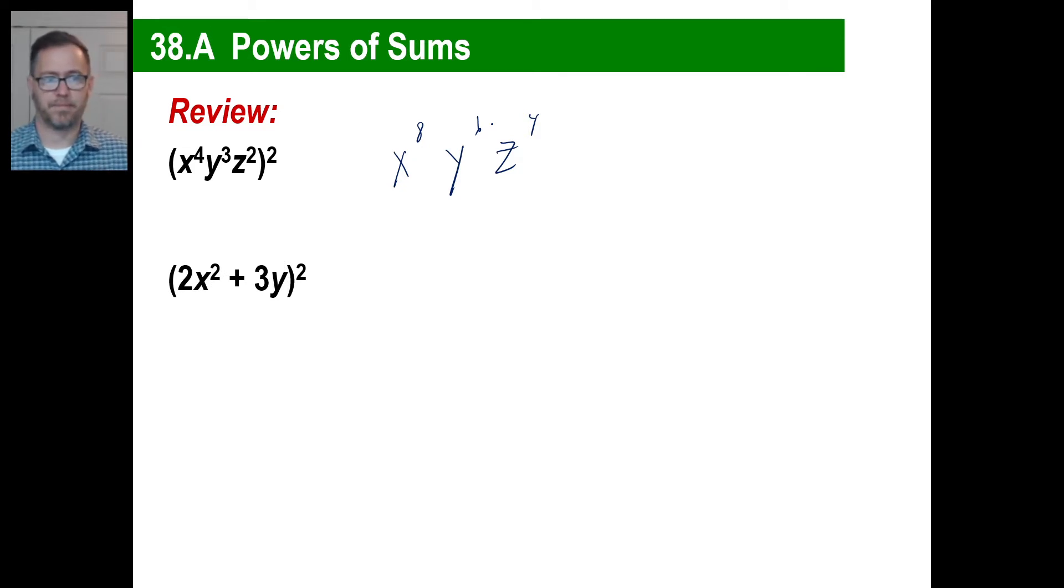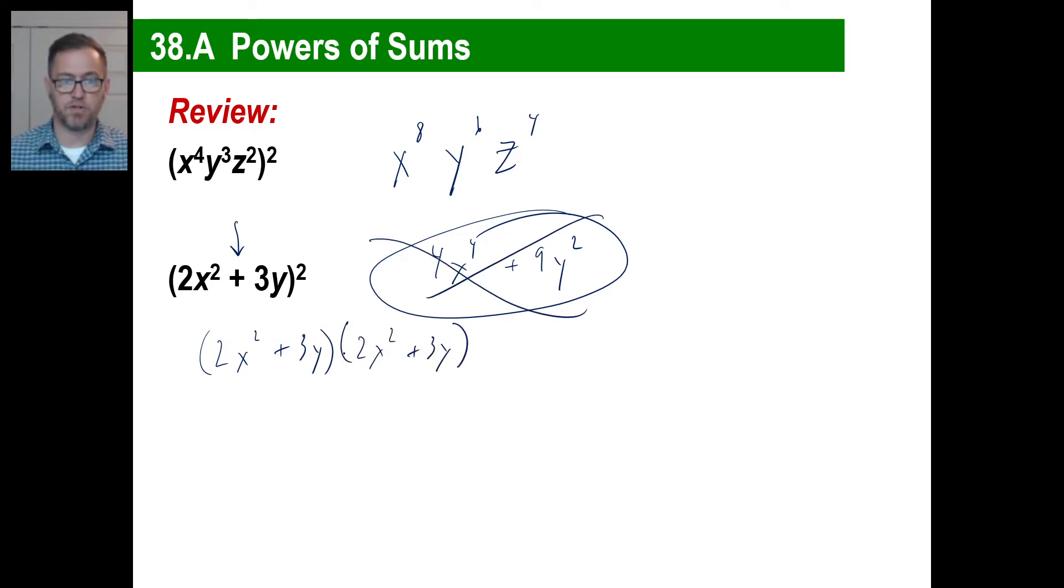How about this one? Now what's different between that and the one above it? What has been added to the second one to make it different from the first one? The plus sign, right? So on this one, you cannot just go, oh, 2x squared, that's going to be 4x to the 4th, and then plus 9y squared. No, you can't do that because of this plus. What this actually means is you're going to have to actually physically write it out. You're going to have to do the 2x all the way across, and then 3y all the way across, and then add like terms and so on. So don't be fooled. When you see a plus or a minus there, don't just raise the powers. You need to actually multiply those out.